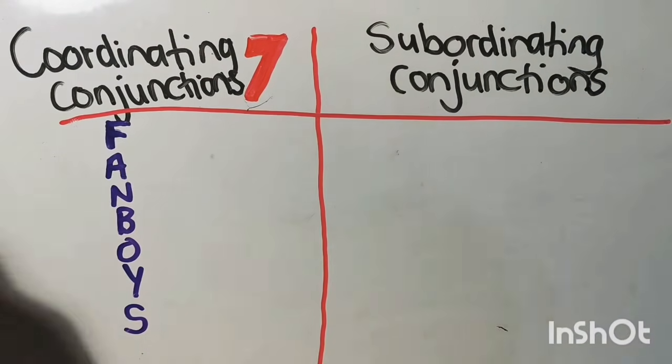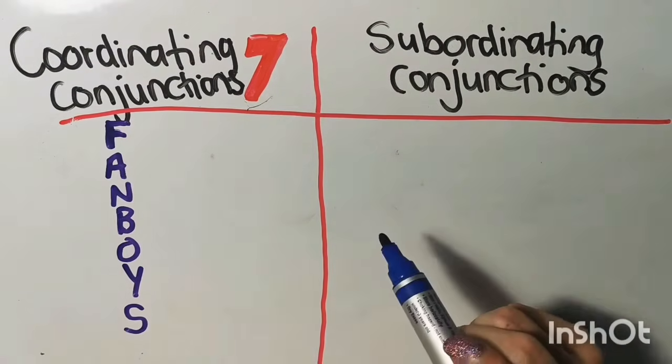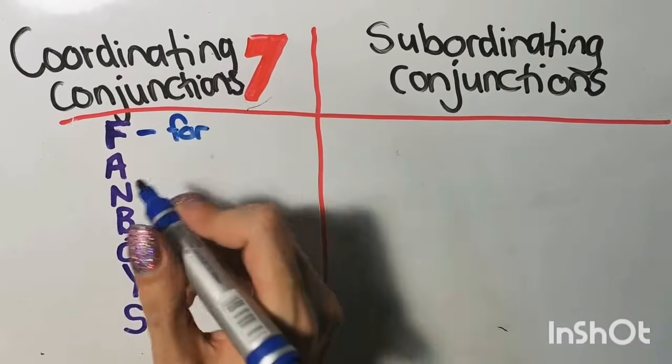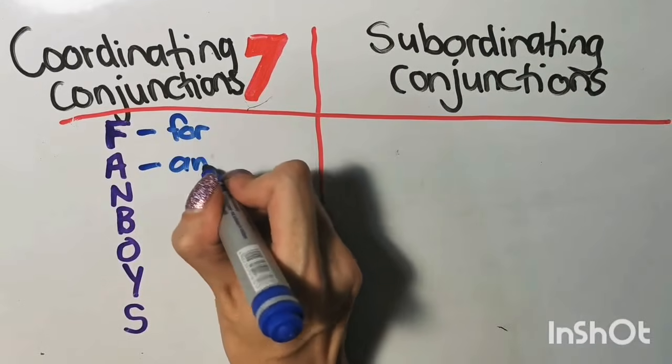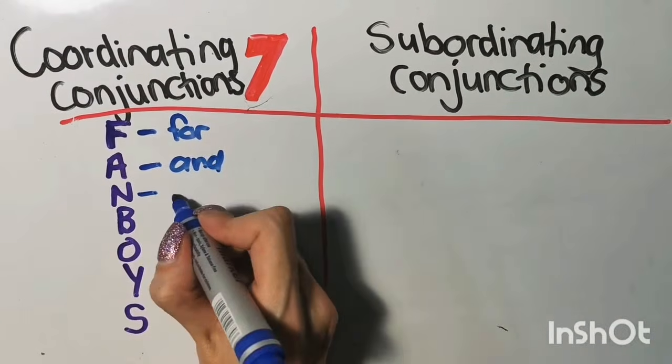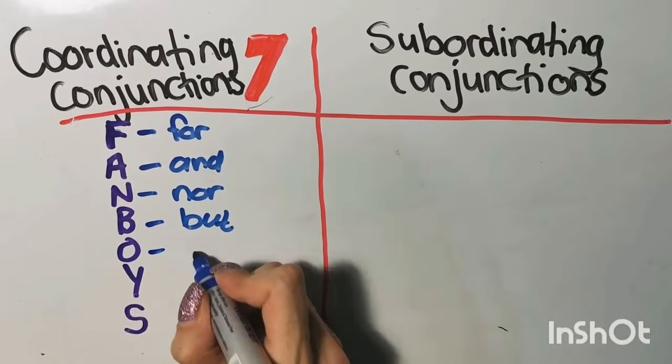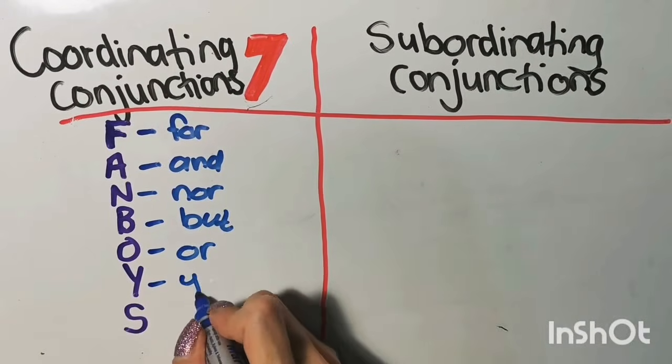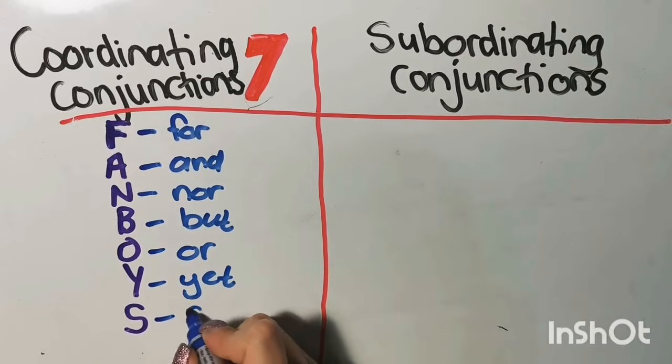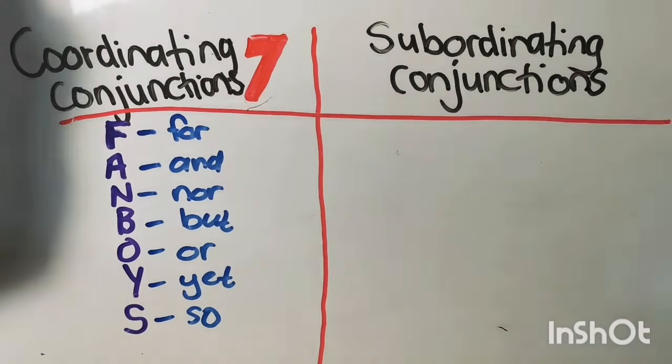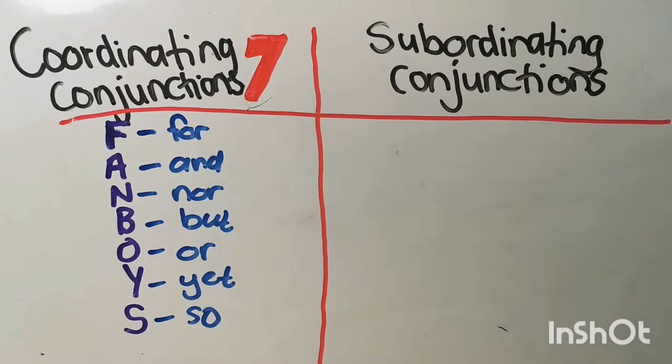Another easy way to remember these conjunctions is to know that each of these conjunctions are only two or three letters long. The F in FANBOYS stands for FOR, the A for AND, the N for NOR, the B for BUT, the O for OR, the Y for YET, and the S for SO. That is how easy it is to remember the seven coordinating conjunctions.